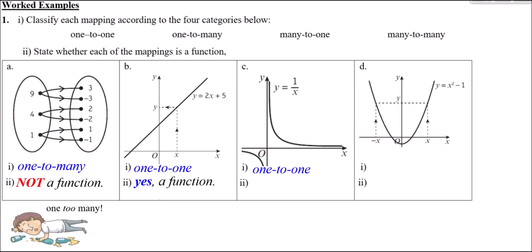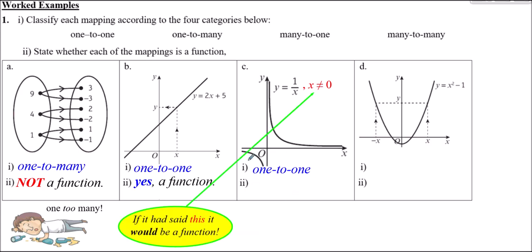Mapping C is y = 1/x with no stated domain restriction. It's certainly one-to-one, as each x maps to one y. However, if no domain is mentioned, we assume x can be anything — but x can't be zero. Since the exclusion 'x ≠ 0' is missing from the stated domain, technically it does not meet the criteria of being a function. Not a function.